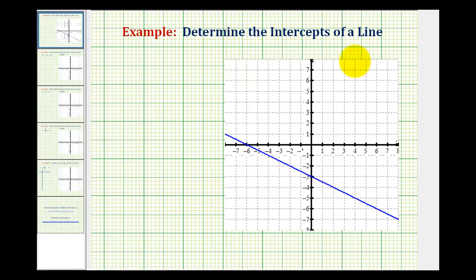To determine the intercepts of a line, we need to determine where the line crosses the x-axis or the horizontal axis, as we see here, and determine where the line crosses the y-axis or the vertical axis, as we see here.